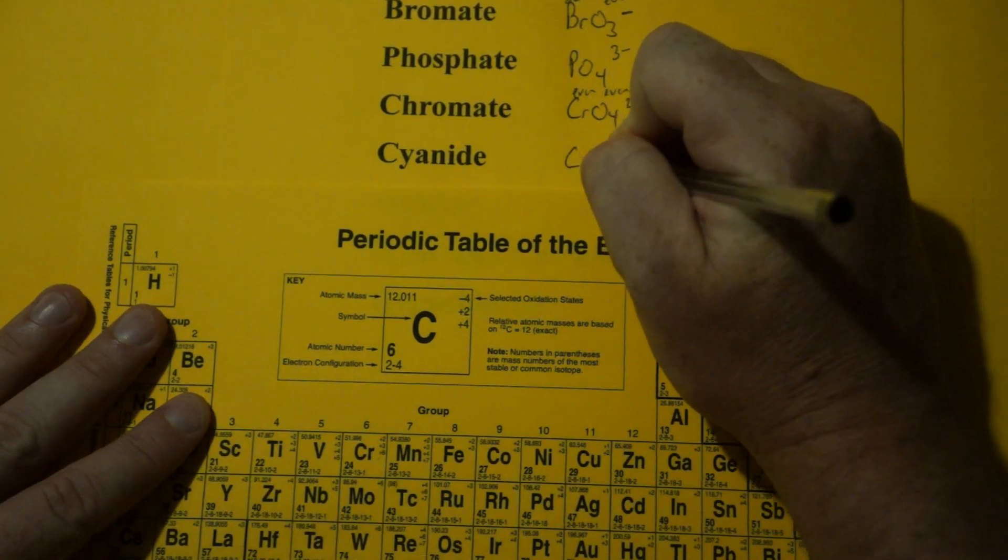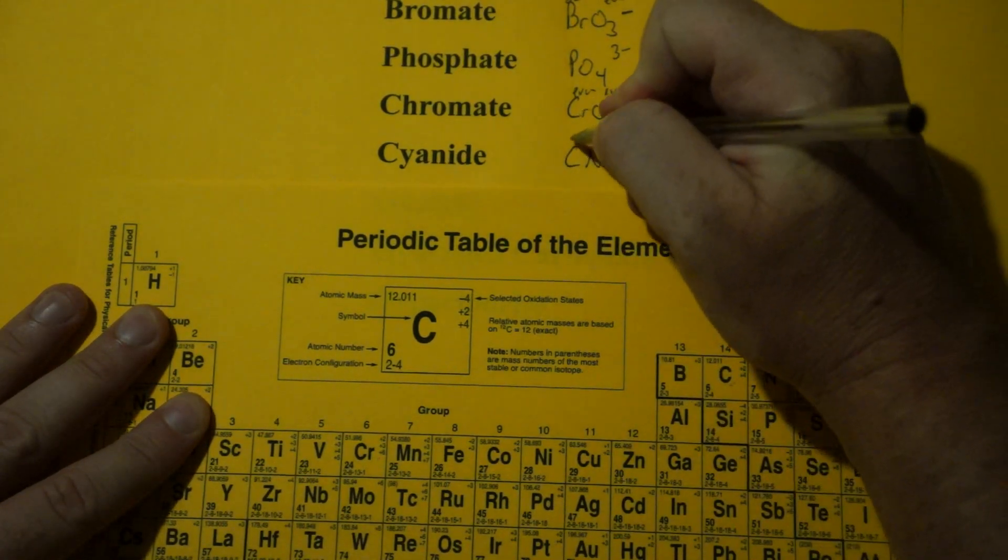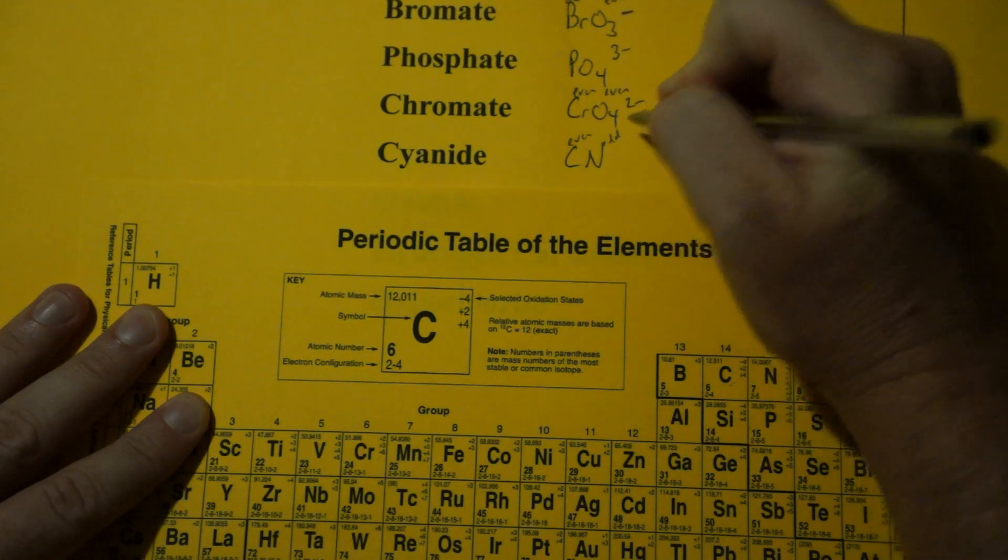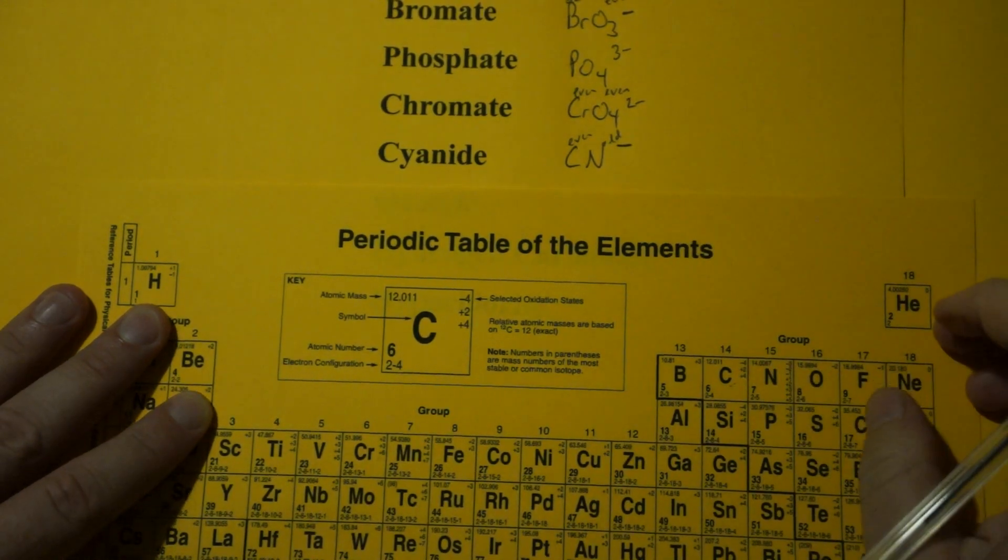Cyanide. Cyanide is CN. Carbon's in group 14. That's even. Nitrogen is in group 15. That's odd. An odd plus an even is an odd, minus 1.